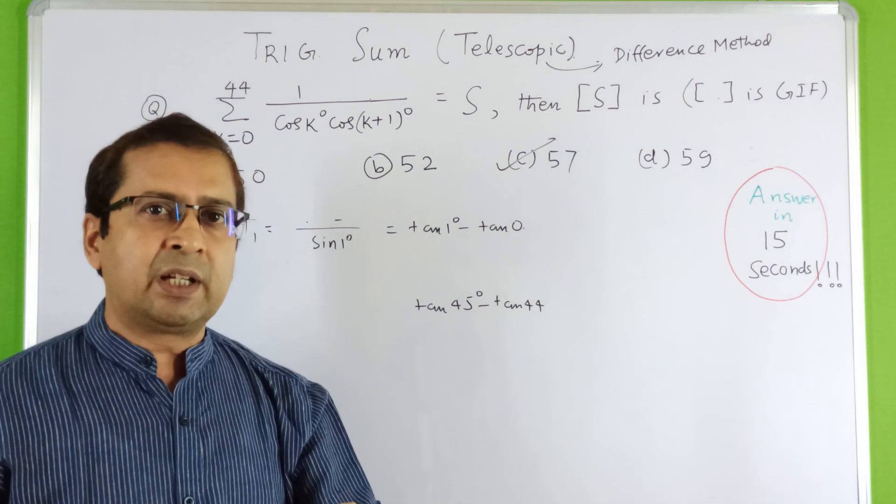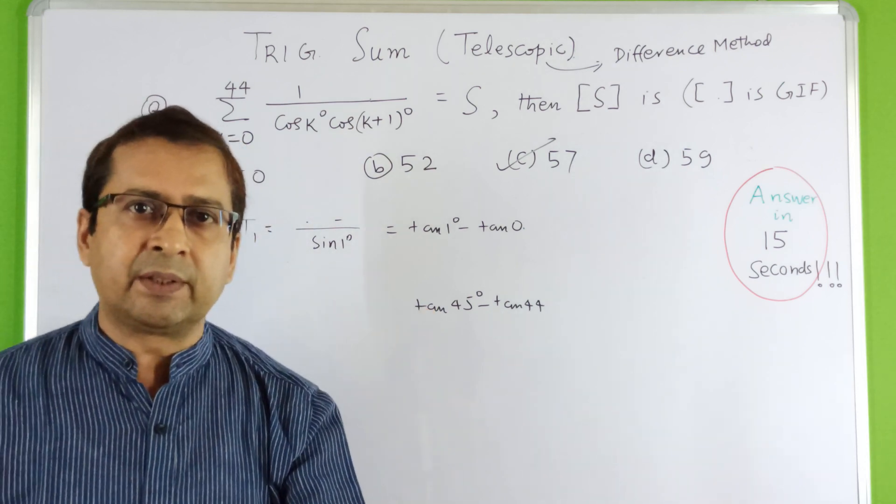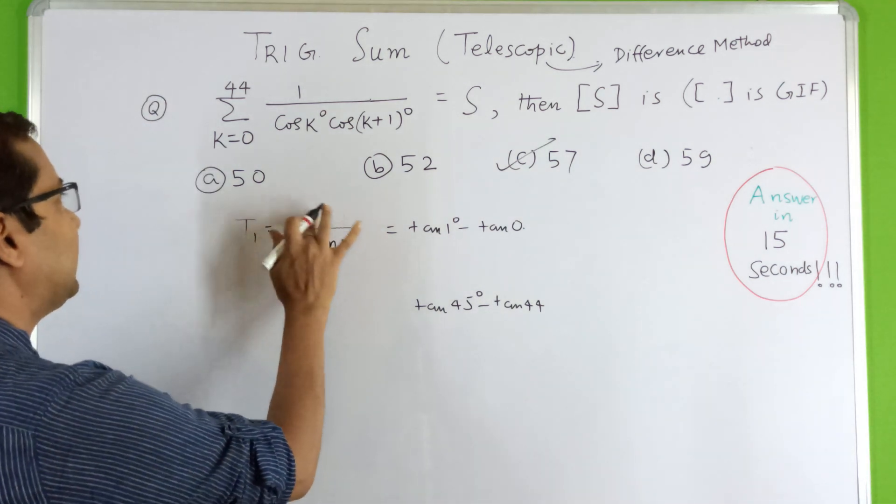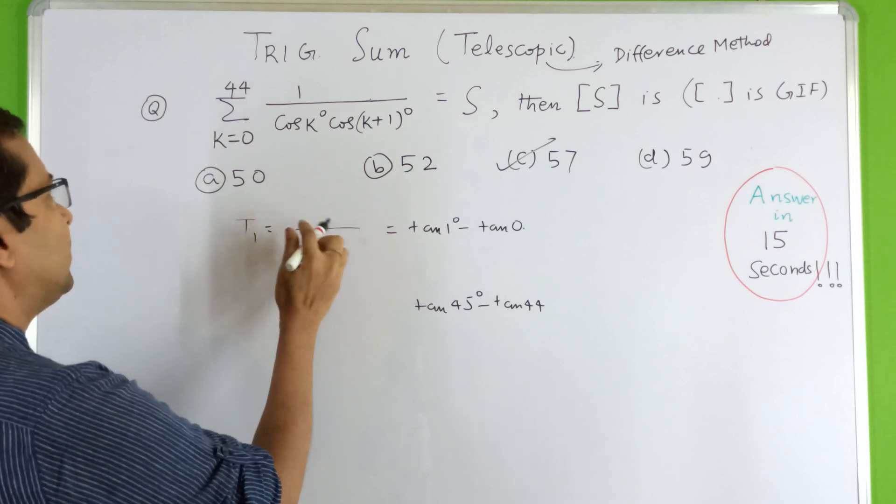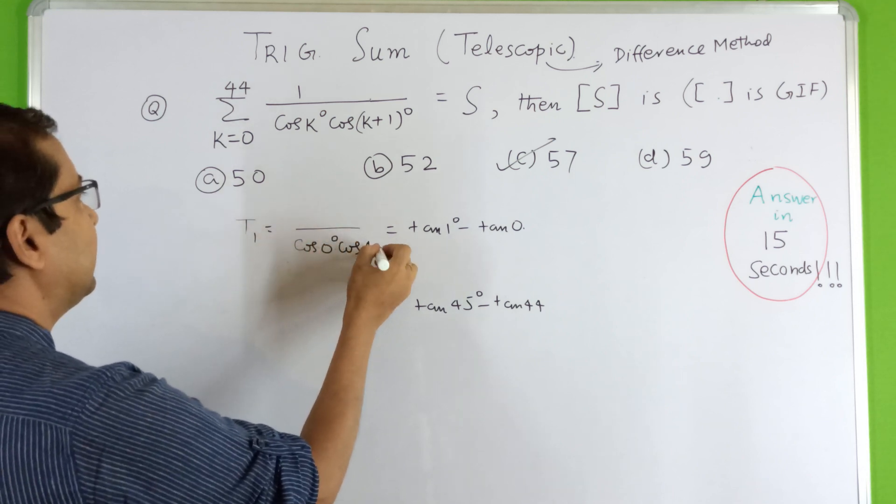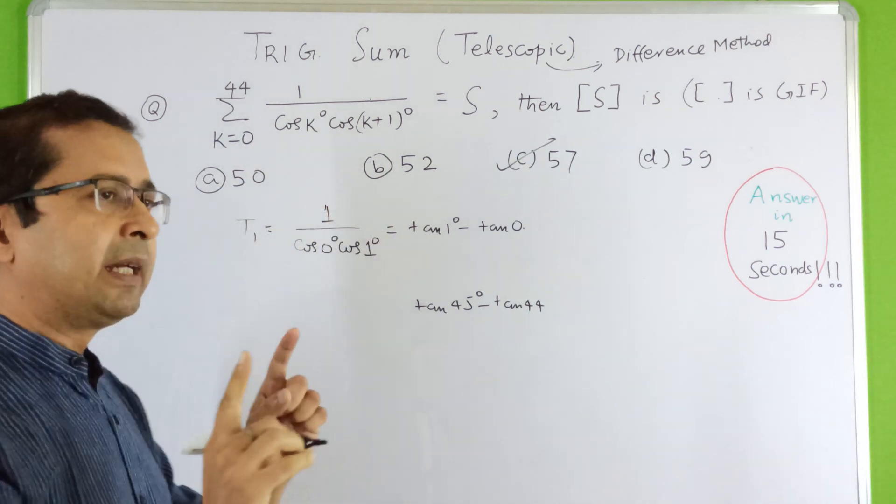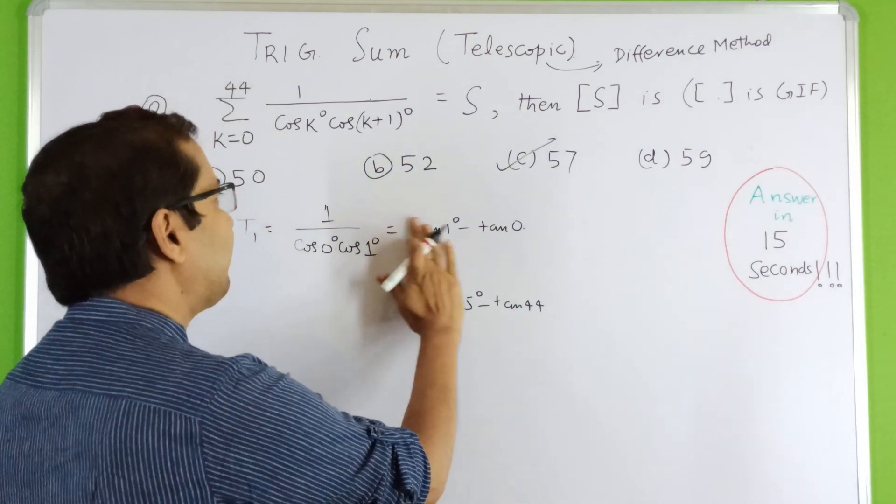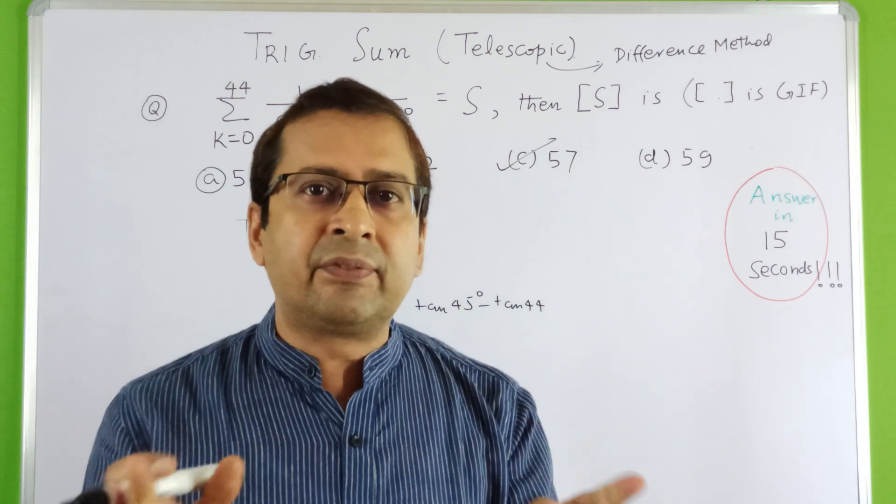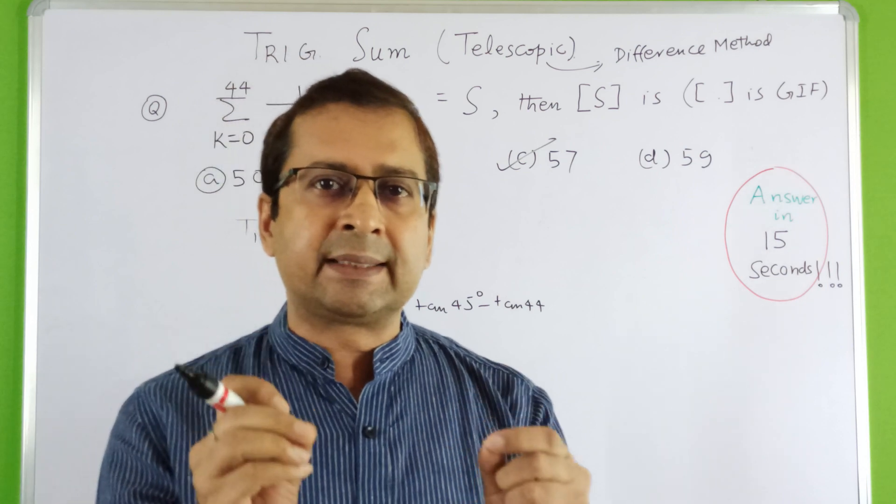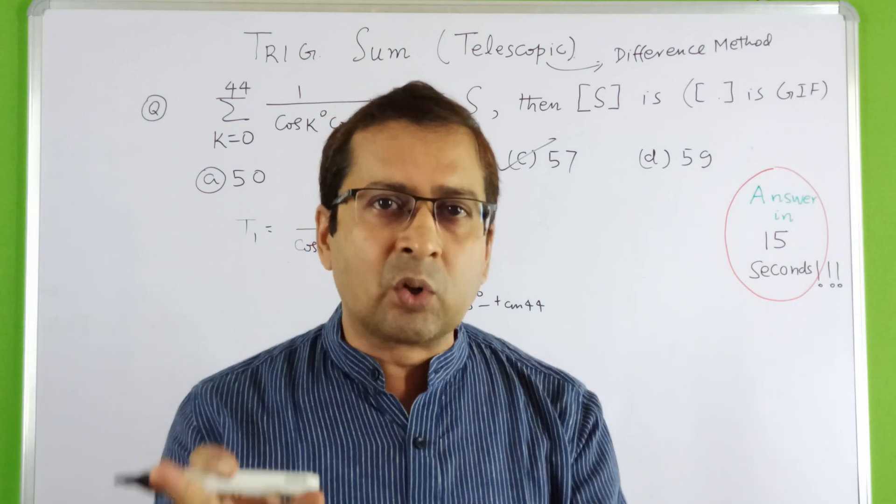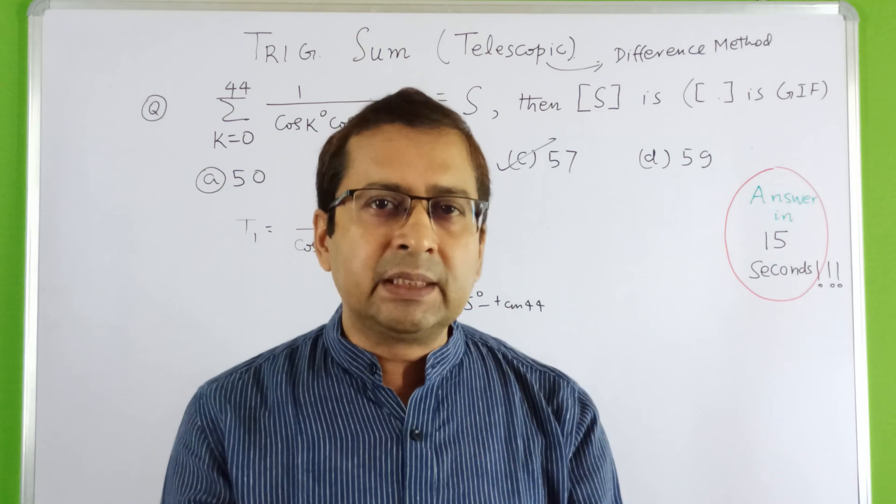K equals 0 means first term, K equals 1 means second term, K equals 44 means 45th term. So I am writing T1, first term T1 here. We have cos 0 degree and cos 1 degree. We have to apply difference method. What I will do here, we will write each term as a difference of two consecutive terms.